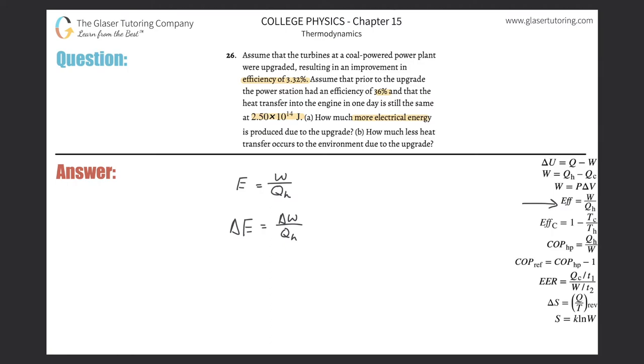So now if I just plug in this change in efficiency of the 3.32%, remember you have to plug that in as a decimal, 0.0332, that's going to equal to the change in work divided by 2.5 times 10 to the 14th. And all we now need to do is calculate. So let's throw that into the calculator. So we get 0.0332 times 2.5 times 10 to the 14th.